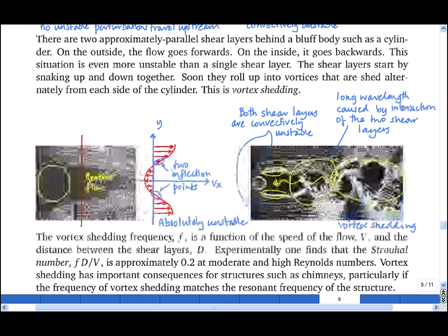This can cause very large amplitude oscillations, and they are at a fixed frequency that depends only on the free stream velocity V, and the diameter of the object or, strictly speaking, the distance between the two shear layers.